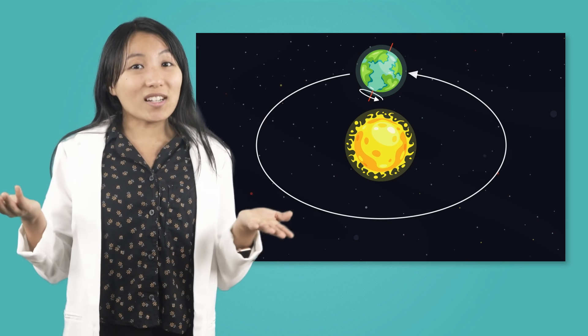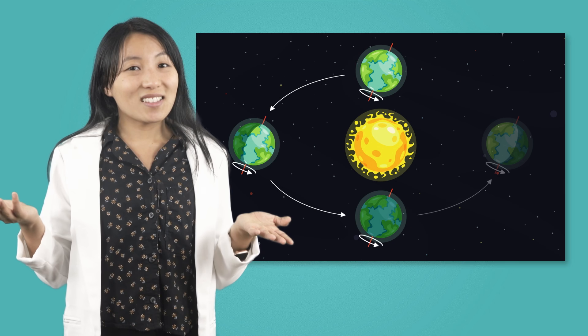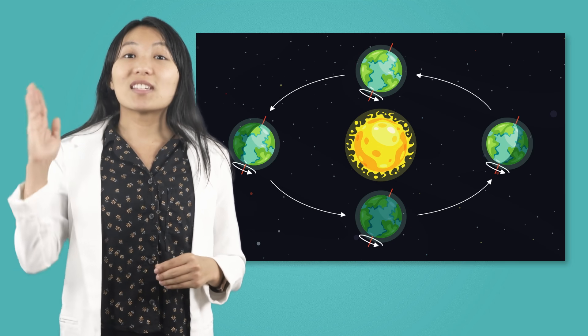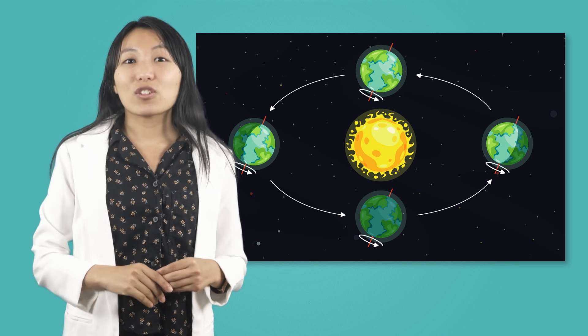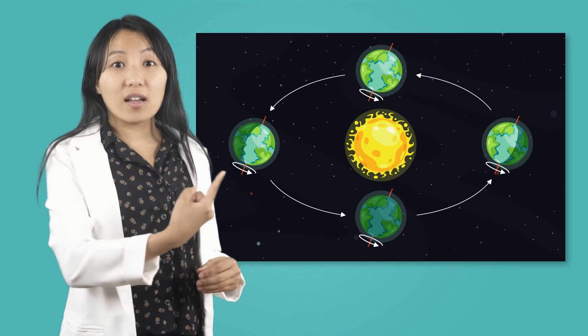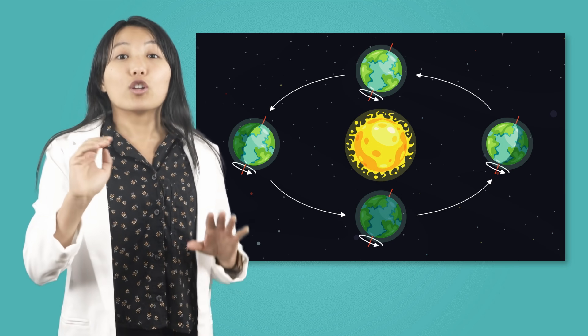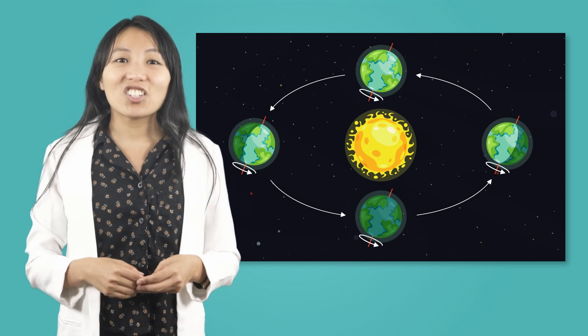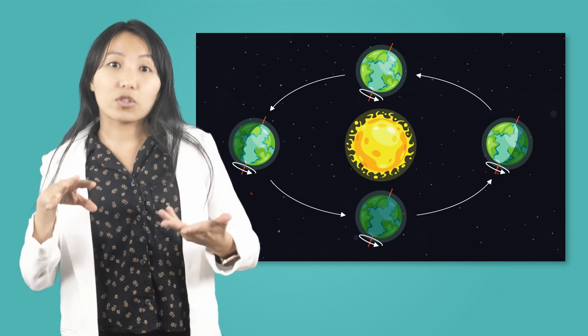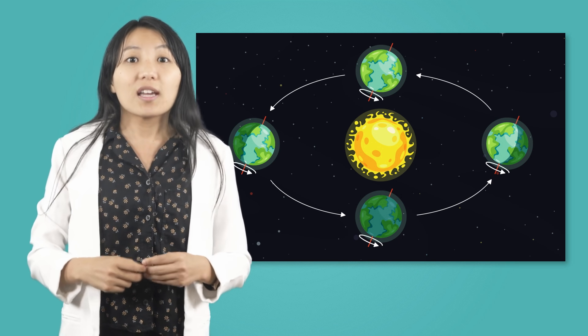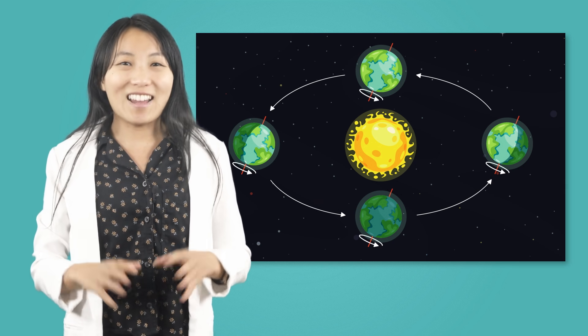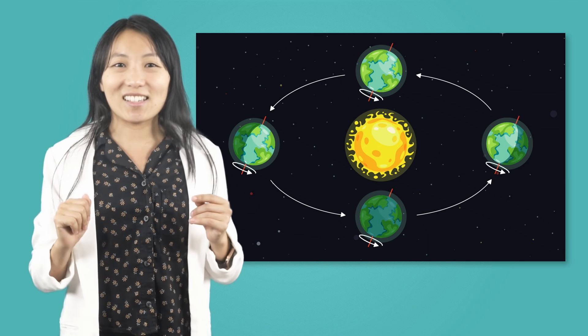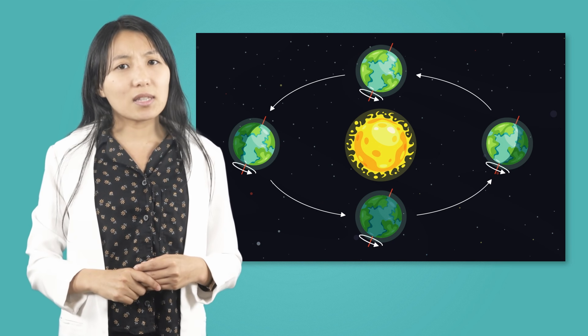So, what causes the four seasons? Earth's tilted axis. As Earth revolves around the Sun, some areas are tilted toward the Sun, while others are tilted away from the Sun. Sunlight shining directly or indirectly during Earth's orbit is what causes our seasons, and it's all thanks to that tilted axis.